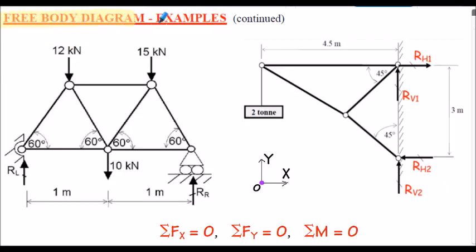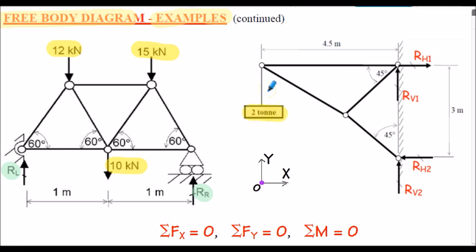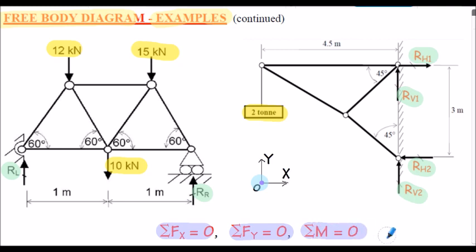This slide shows what are termed plane trusses — two-dimensional trusses whose members can only withstand tension or compression loading. For the left-hand truss we have applied loading reacted by reactions RL and RR. For the right-hand truss we have a two-tonne applied load with four reactions — two horizontal and two vertical. To solve these static trusses we apply Newton's first law, summing forces in the x and y directions and taking moments about a particular point on the truss structure.